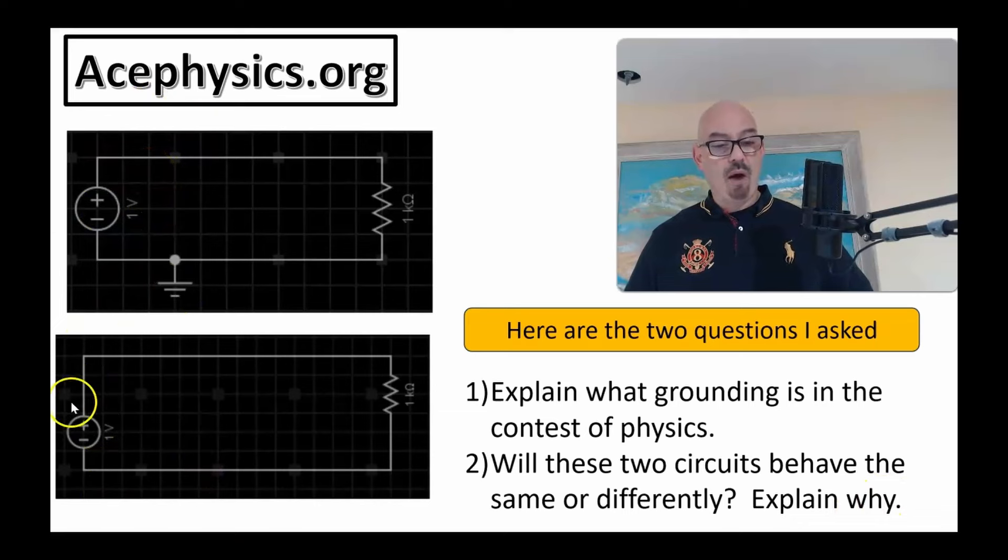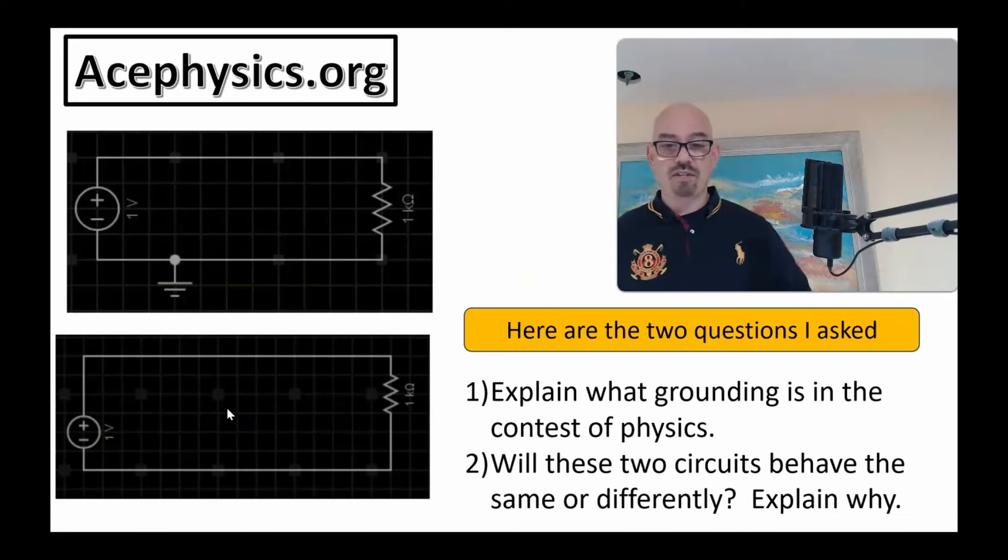They're simple circuits. They have a one-volt power supply or battery and a one-kilohm resistor. The only difference is the negative terminal of this resistor is attached to ground, where for this circuit, there's no ground attachment. So once again, the question is, will these circuits behave the same or differently, and can you explain why?